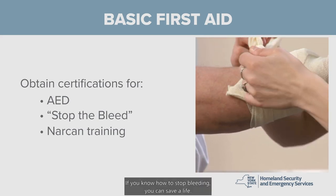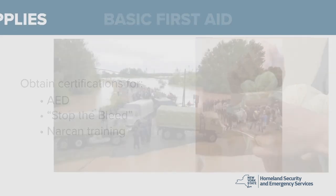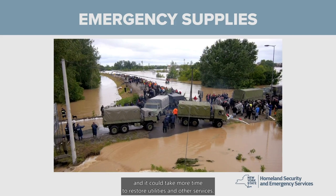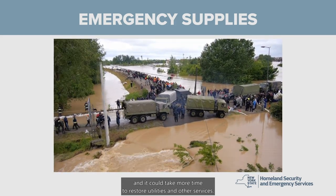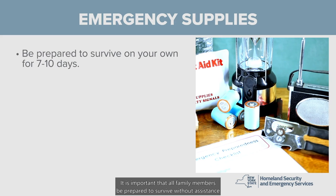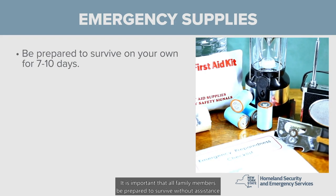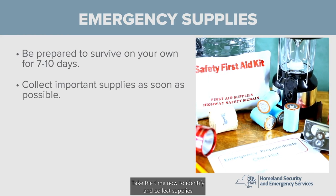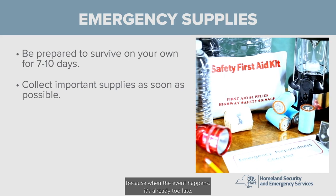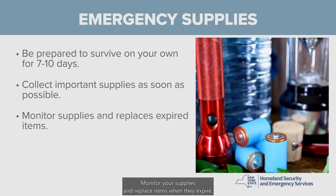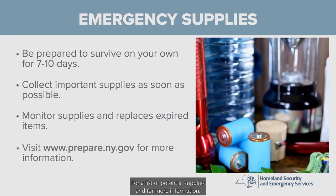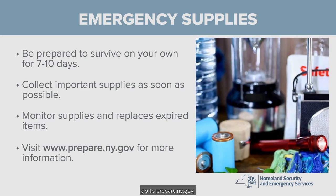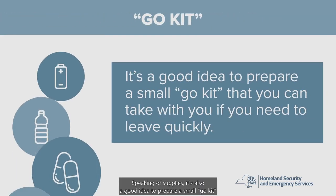In the event of a major emergency, emergency services may be stretched thin, and it could take more time to restore utilities and other services. It is important that all family members be prepared to survive without assistance for 7 to 10 days. Take the time now to identify and collect supplies, because when the event happens, it's already too late. Monitor your supplies and replace items when they expire. For a list of potential supplies and for more information, go to prepare.ny.gov.